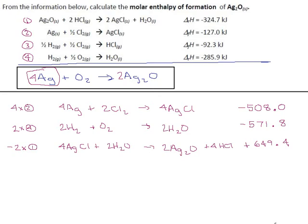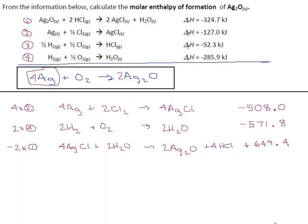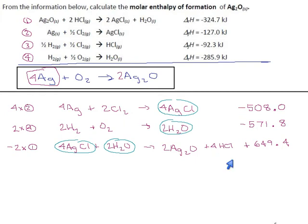Let's see what we can cancel. Four silver chloride cancels, and the water drops out. That's good, but it's not enough. We still have hydrogen hanging around and chlorine hanging around, and hydrogen chloride gas hanging around over here. So there's definitely still more work to do. There's another reaction — hopefully this can save us.